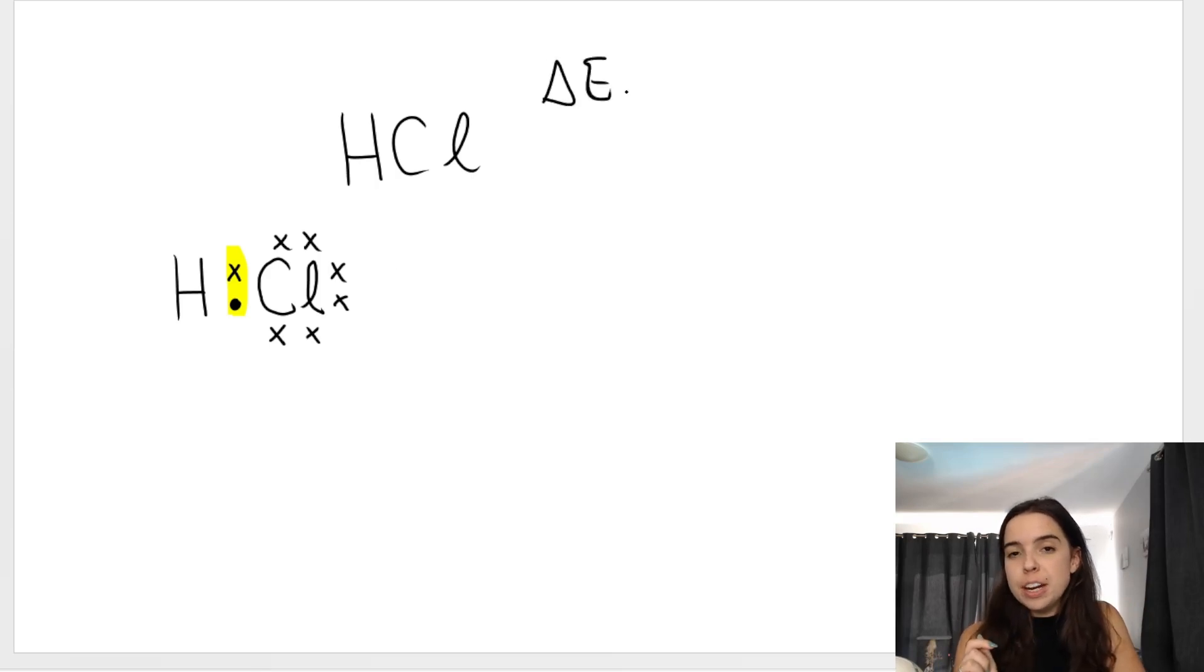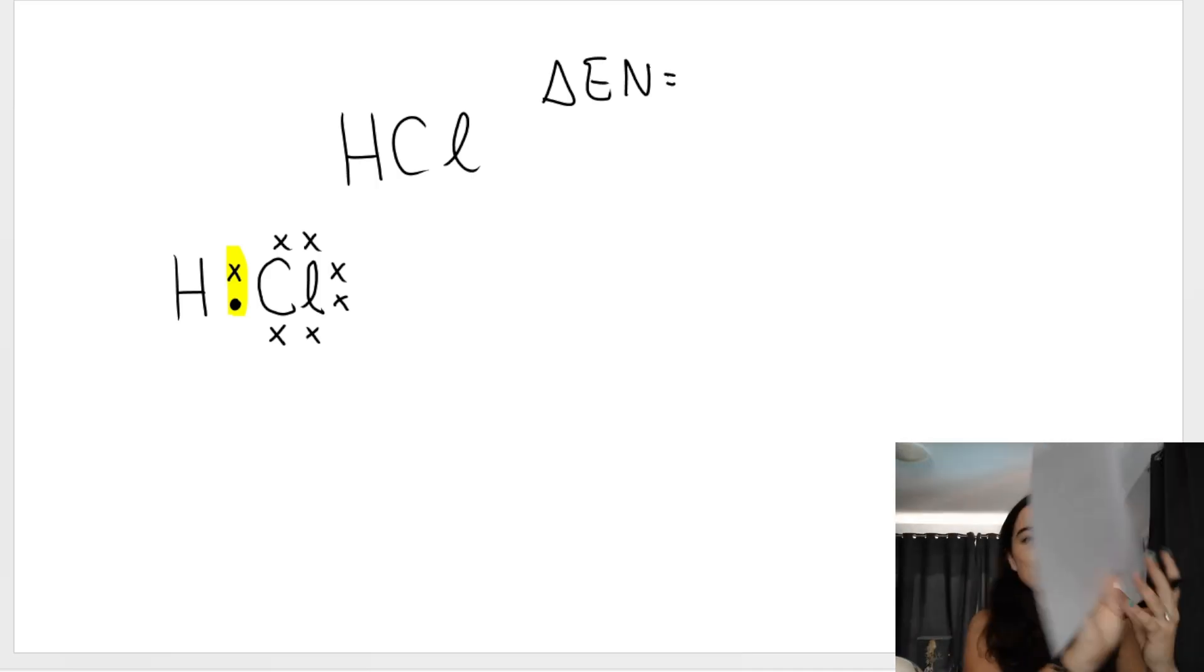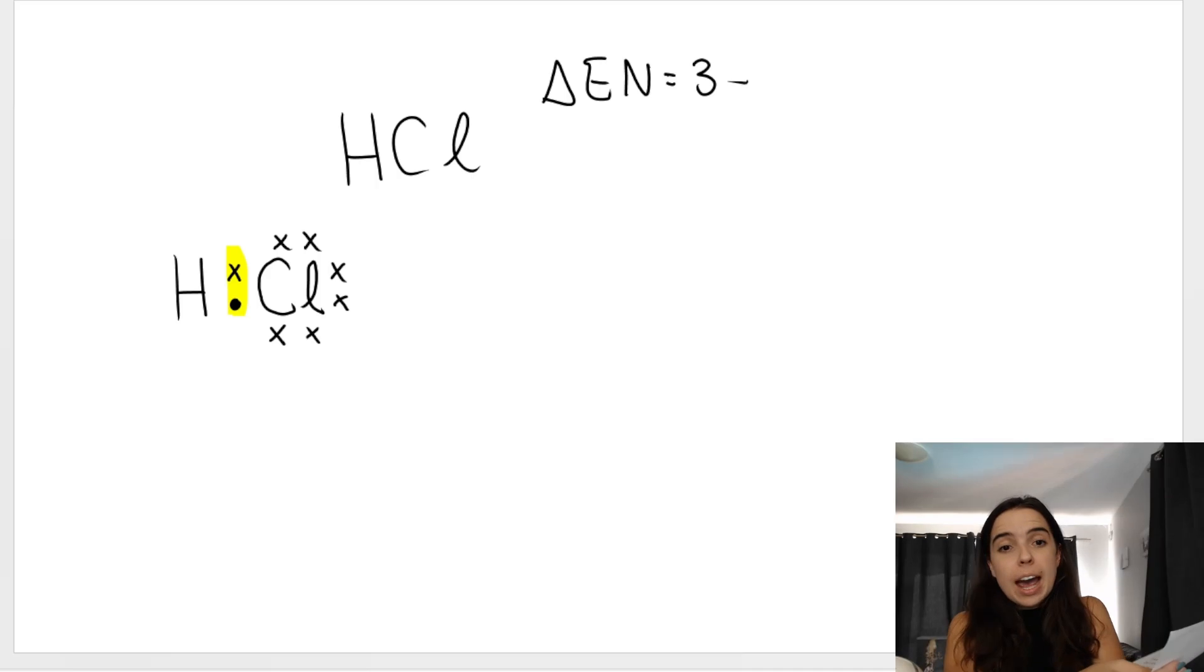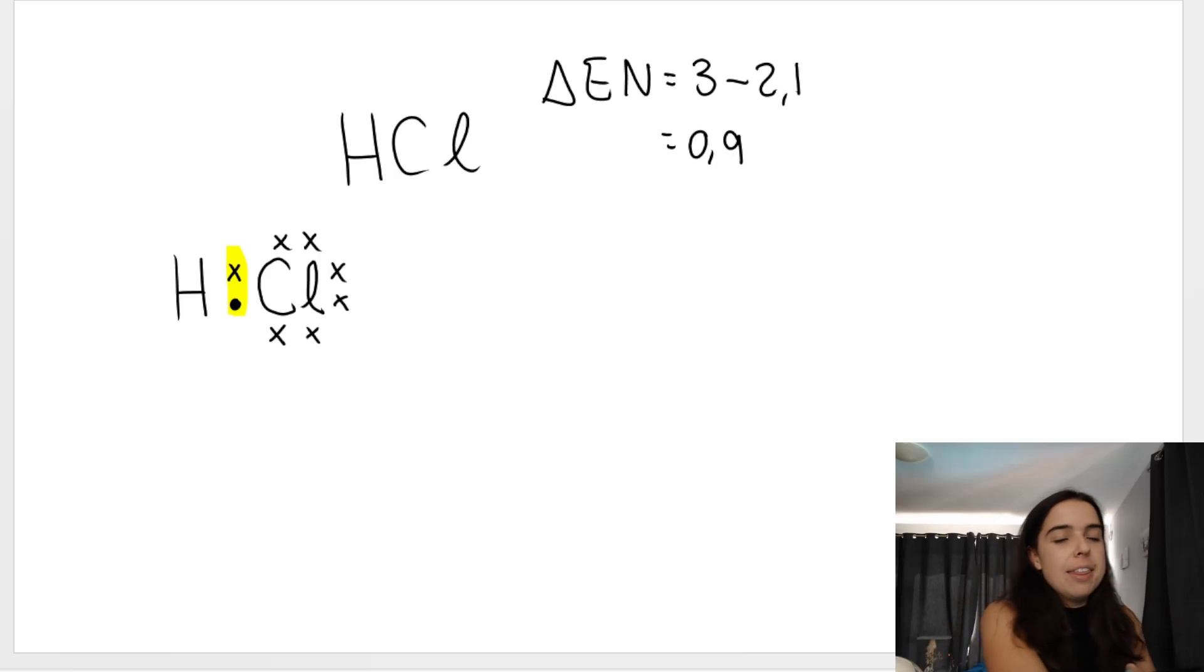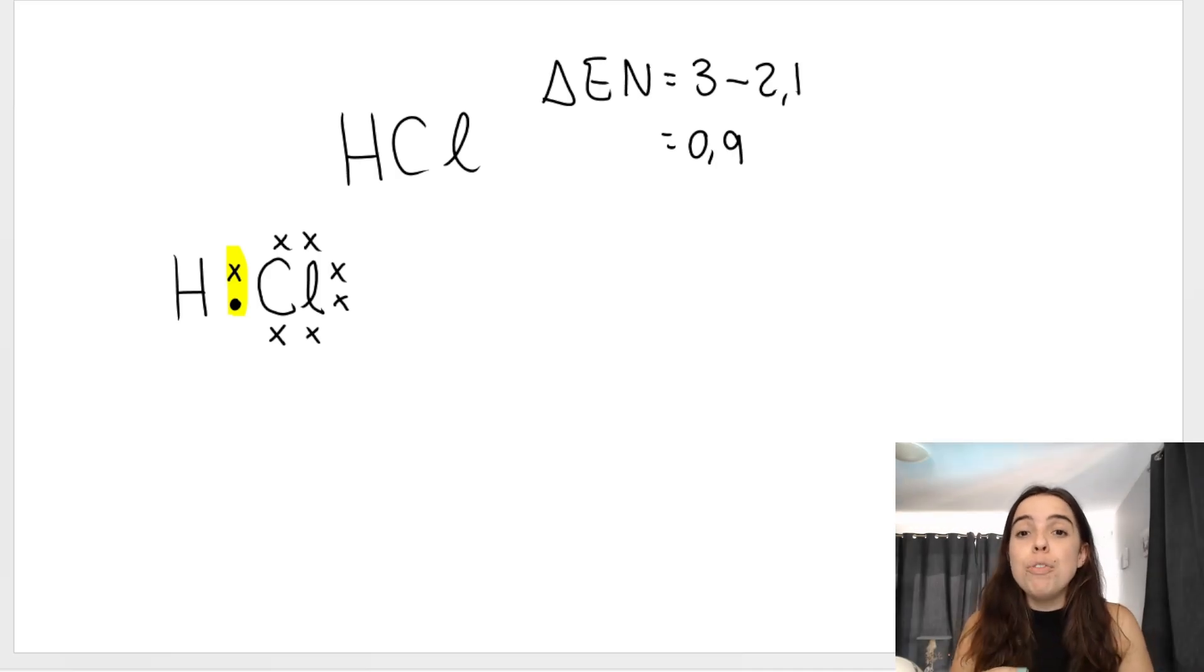But what is important is if I work out the difference in electronegativity for hydrogen chloride HCl, I'm looking at my periodic table over here. Chlorine has an electronegativity of 3, and hydrogen is 2.1. 3 minus 2.1 is 0.9. That means that it is a polar covalent bond, something that we did in a previous video.